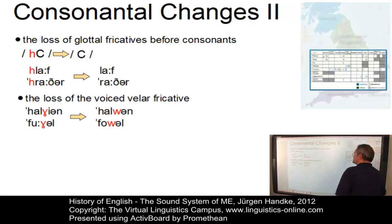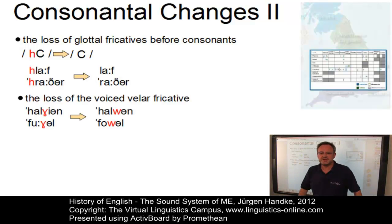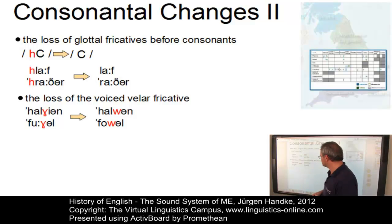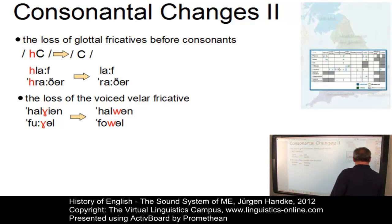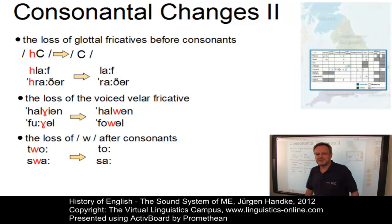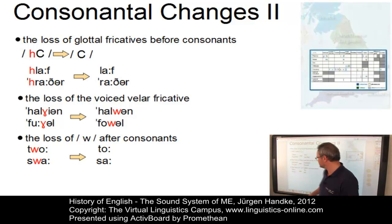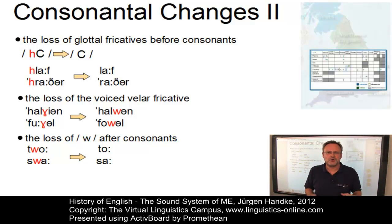Another example is the loss of the voiced velar fricative, a typical Germanic consonant: 'hālgian' became 'hālwen', 'fugel' became 'fowel'. There was also the loss of the labio-velar approximant after consonants, with examples such as 'twō' becoming 'tō', and 'swā' becoming 'sā'.